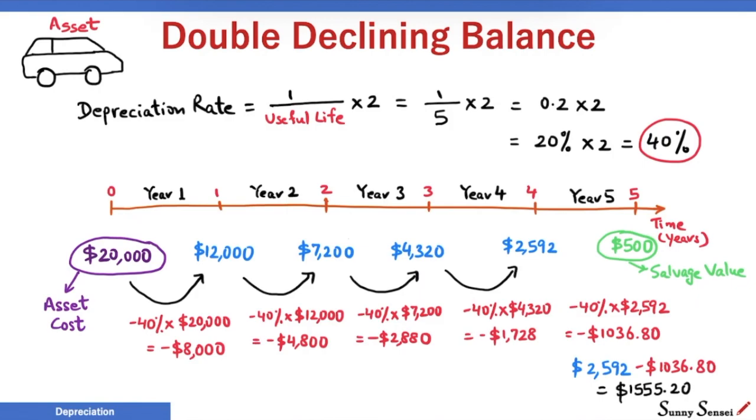We have a problem here. Our salvage value should be $500. How should we proceed? We simply adjust the depreciation value to $2,092 to ensure that the leftover value after 5 years is $500, our expected salvage value. This kind of adjustments are acceptable in this method to ensure the correct salvage value.